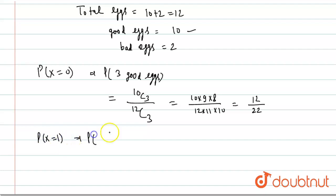P(X = 1) means that 1 egg is bad and 2 eggs are good.